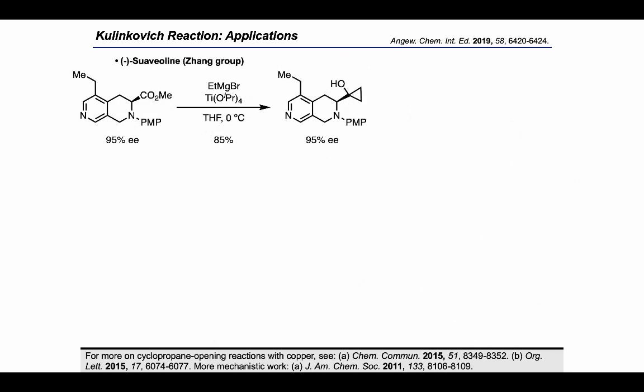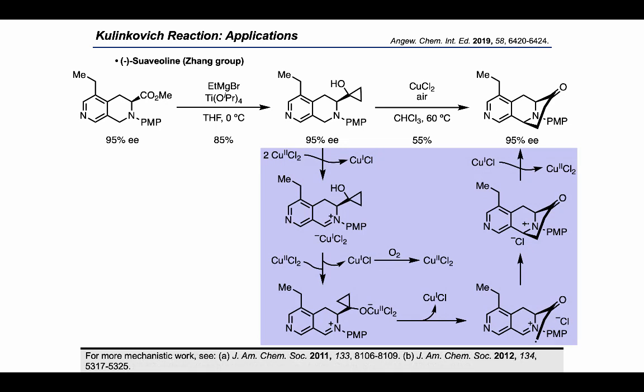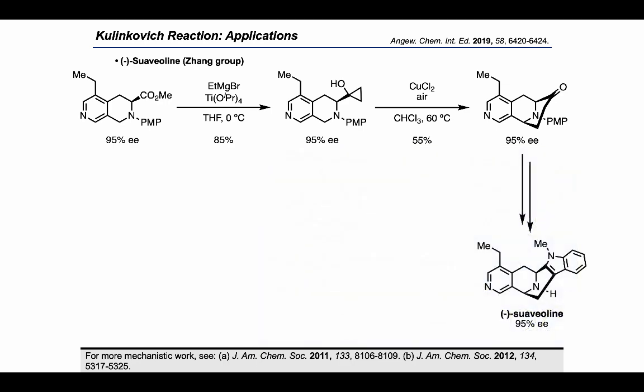In one last example, the Zhen group employed the Kulinkovitch reaction in their total synthesis of Suavioline. Starting from an enantioenriched substrate, typical Kulinkovitch conditions converted the ester into a cyclopropanol without any erosion of enantiopurity. Treatment with copper(II) chloride in air formed a bridged product, proposed to proceed through oxidation of the amine to an aminium radical by Cu(II), followed by Cu(II) coordination to the cyclopropanol triggering ring cleavage to form a radical, radical addition into the aminium to form a nitrogen-centered cation radical, and finally reduction by Cu(I) to give the product. This is another great demonstration of how the Kulinkovitch reaction can set up downstream transformations originating from cyclopropane motifs.